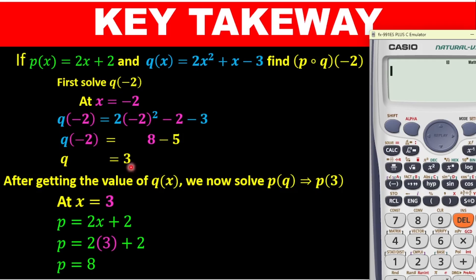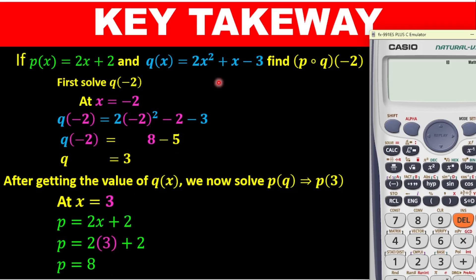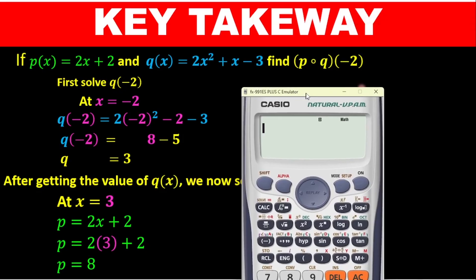After getting 3, you now put this 3 into p(x). In place of x we put 3, so we have 2 × 3 = 6, and 6 + 2 = 8. So solving it manually, p of k of -2 gives us 8. That's the manual solution — now let's use the calculator and see how easy it is.